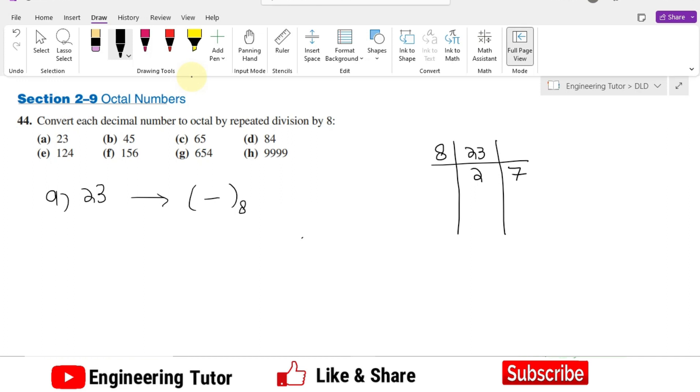Writing it here, I will start from here to here, from this point to this one. This 2 is the most significant digit while this 7 is the least significant digit. Here the answer is 27 in octal.